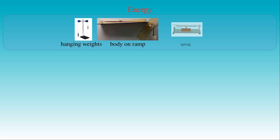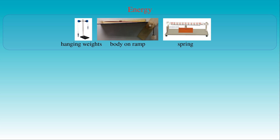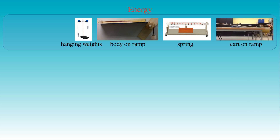A stretched spring is also able to do work if it is released by accelerating the body attached to its free end. If we push a cart on a table then it will be able to coast up a ramp and reach a given height, or compress a spring with one end fixed. In these examples, we can see that the lifted body, the stretched spring, and the traveling cart are capable of doing work — that is, these bodies have the capacity of doing work against gravitational, frictional, and elastic forces.